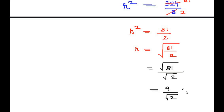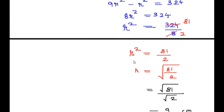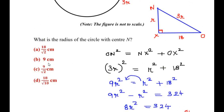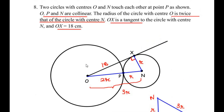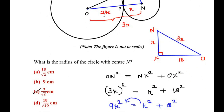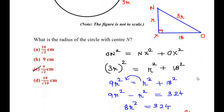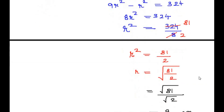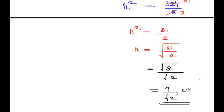So the radius of the smaller circle is r equals 9 over root 2. Checking the options, this matches option C: 9 over square root of 2. Remember to form a right-angled triangle by understanding the relationships given in the question, then use the Pythagoras theorem to find the radius. I hope you understood all the steps. If you liked the video, please like, share and subscribe to my channel. Thank you for watching.